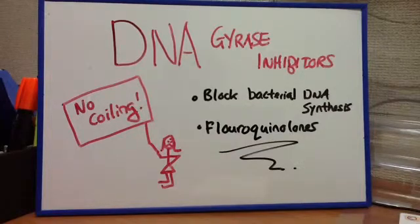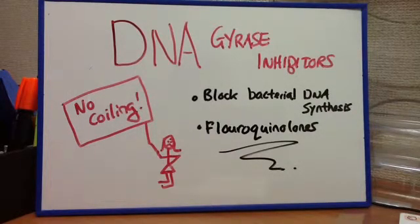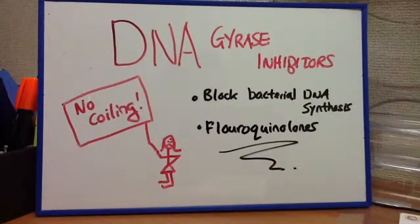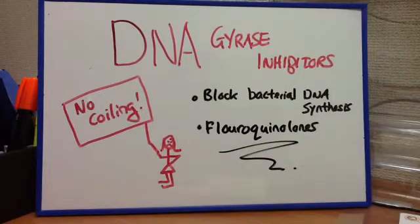Now we're going to talk about DNA gyrase inhibitors, and the example here is fluoroquinolones. What they're doing is blocking bacterial DNA synthesis — specifically, they stop the coiling of the DNA.